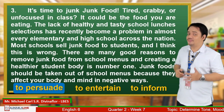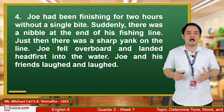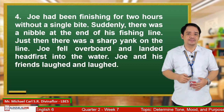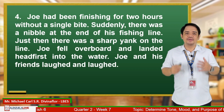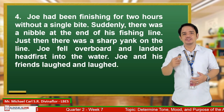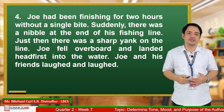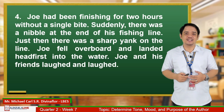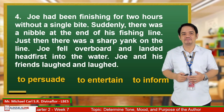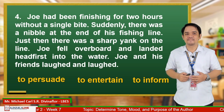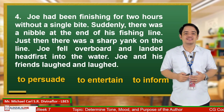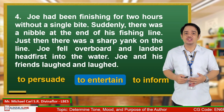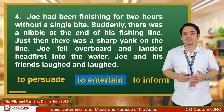Number 4: 'Joe had been fishing for 2 hours without a single bite. Suddenly, there was a nibble at the end of his fishing line. Just then, there was a sharp yank on the line. Joe fell overboard and landed headfirst into the water. Joe and his friends laughed and laughed.' The correct answer is E — to entertain. The author made use of the anecdote about Joe's fishing experience.